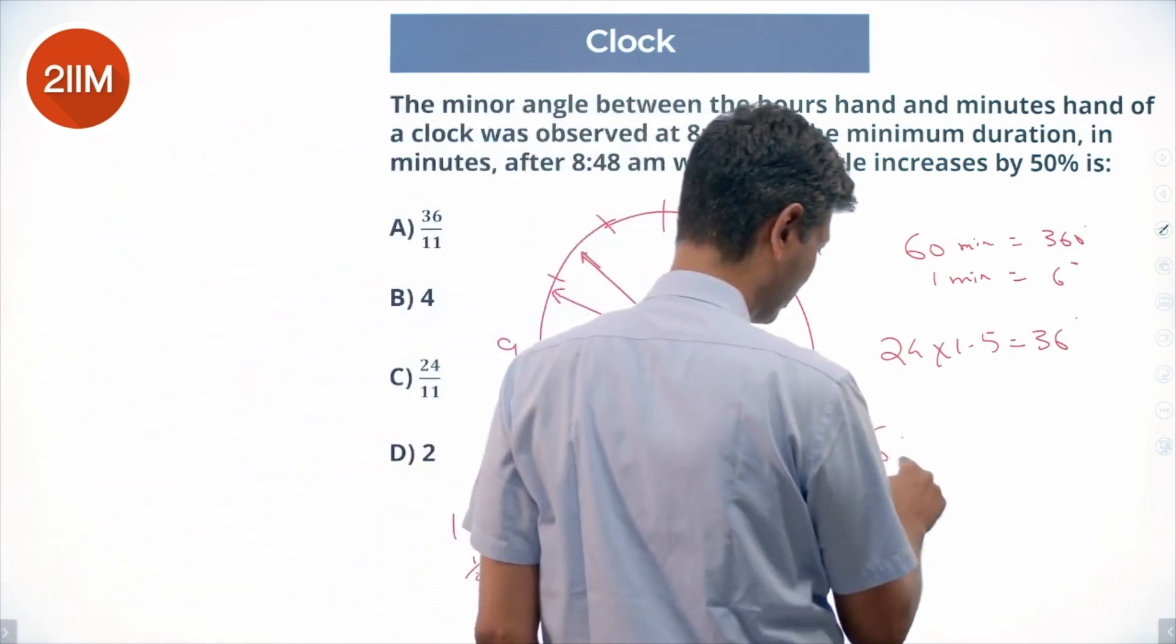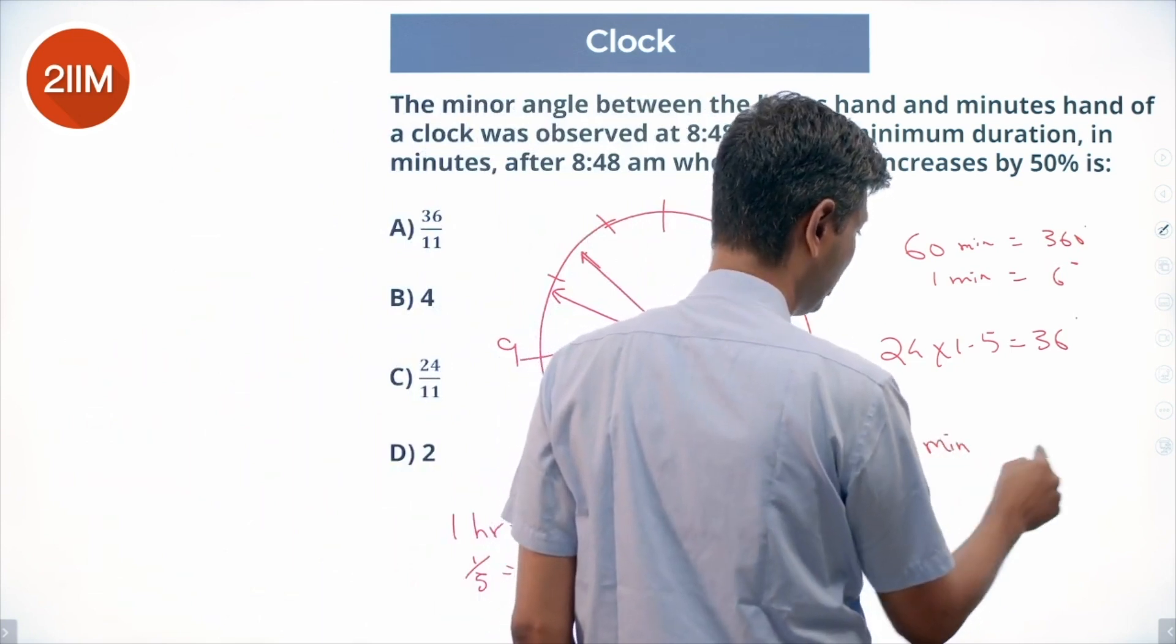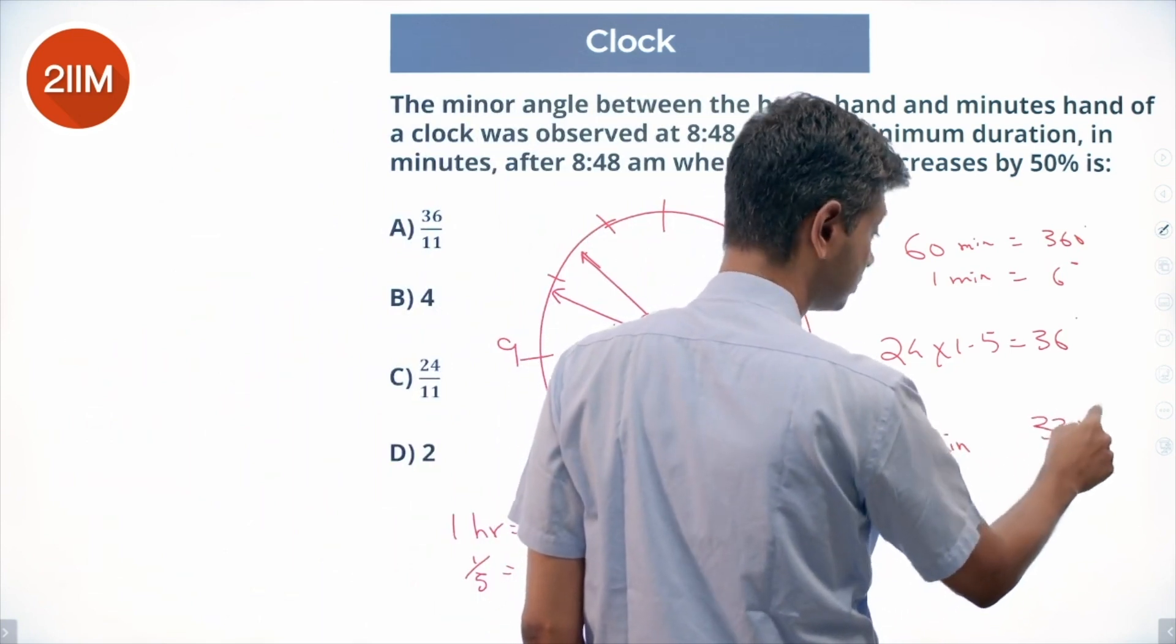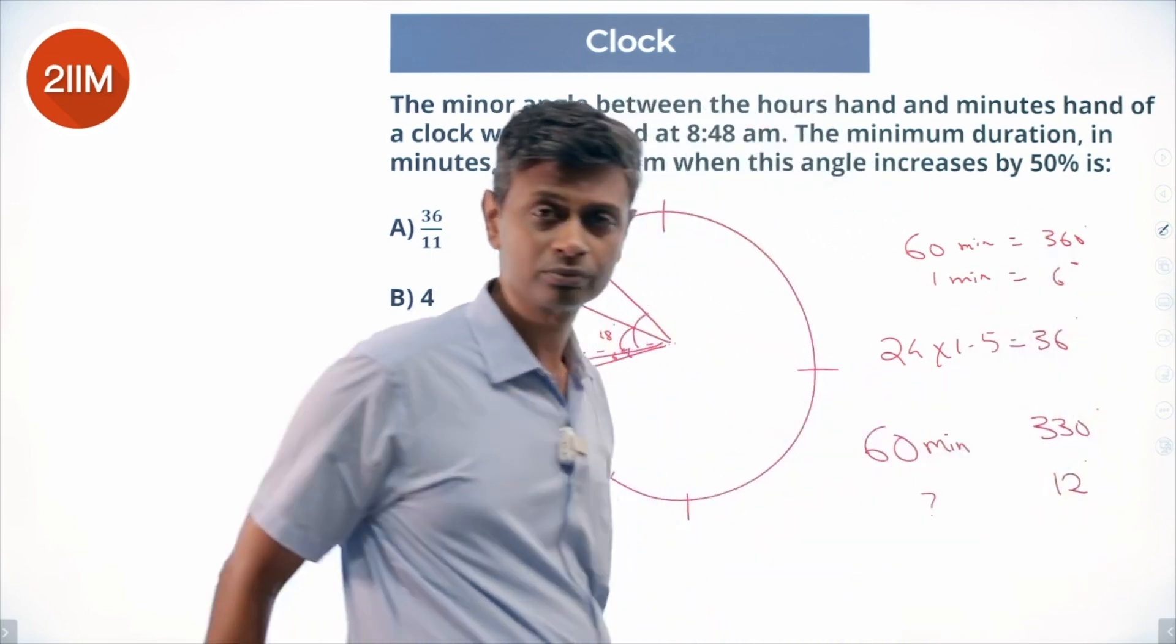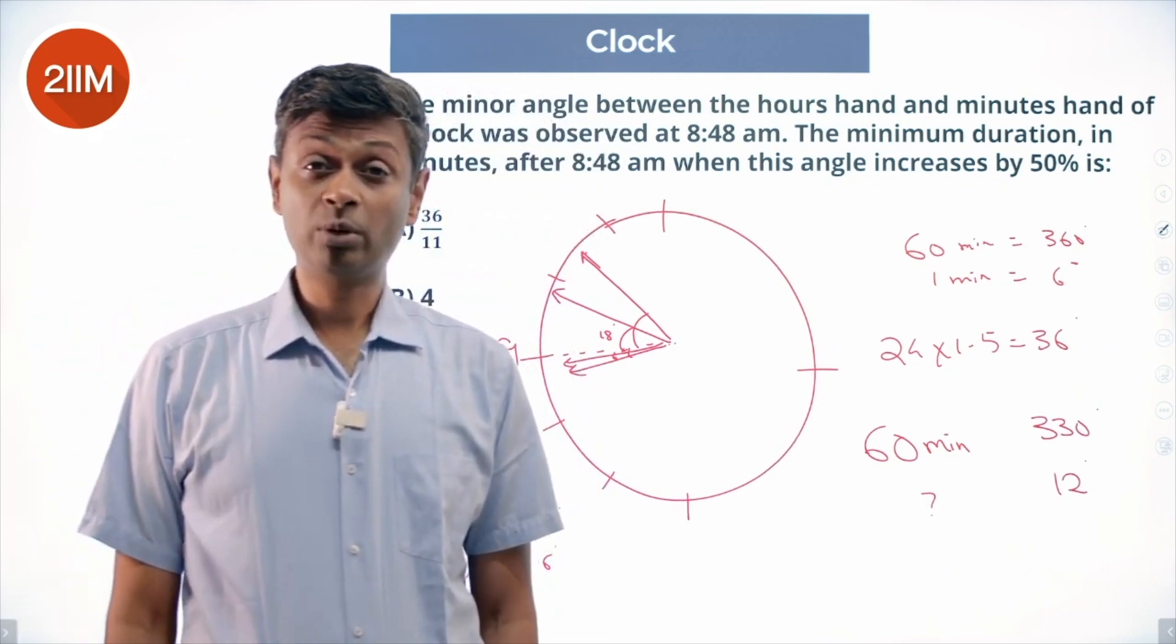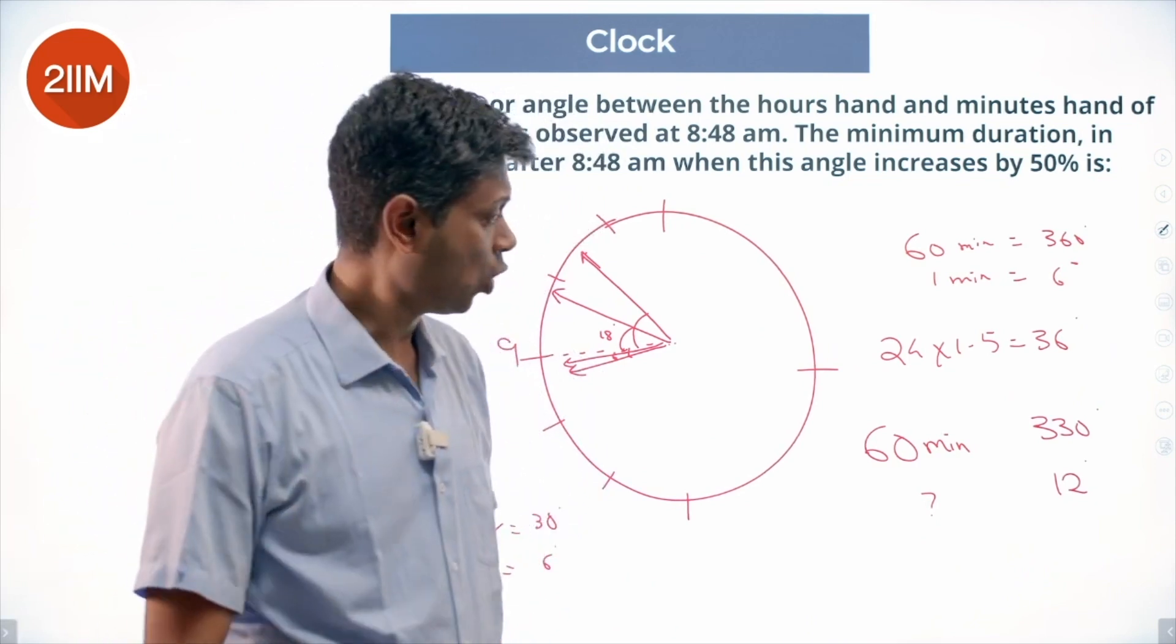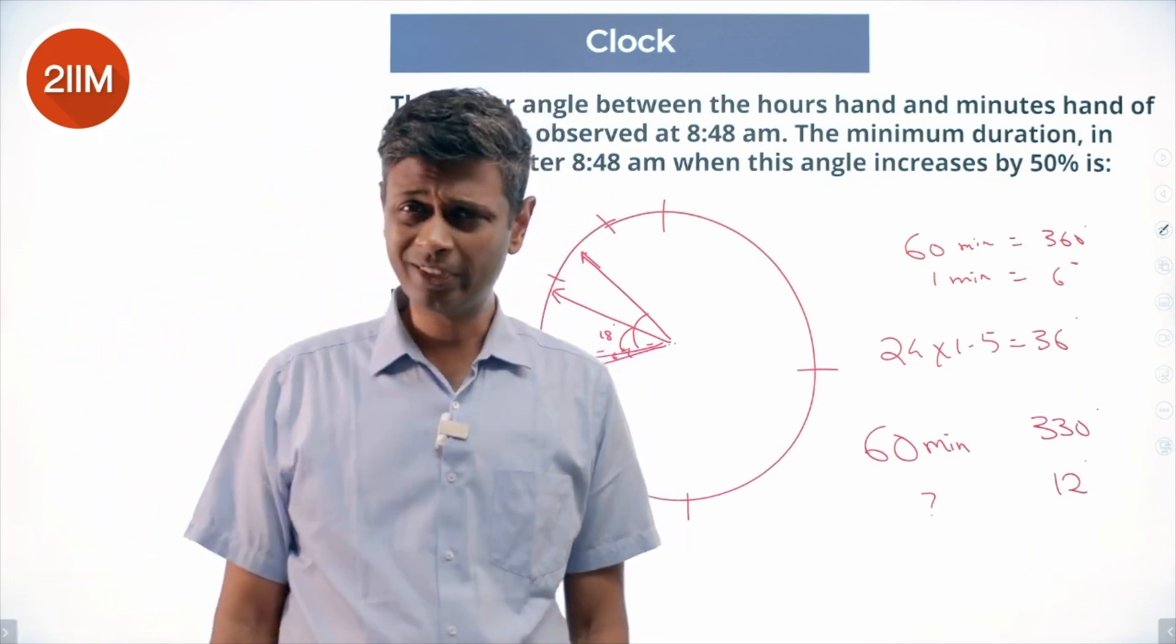In 1 hour, in 60 minutes, minute hand gains 330 degrees. In how many minutes will it gain 12 degrees? That's it. In one full circle the minute hand will gain 330 degrees. In how much time will it gain exactly 12 degrees? We are through.